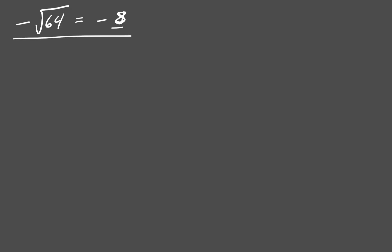If I try and take the negative cube root of 27 — 27 is 3 cubed — so this is a negative 3 because the radical happens first, and then the negative happens.